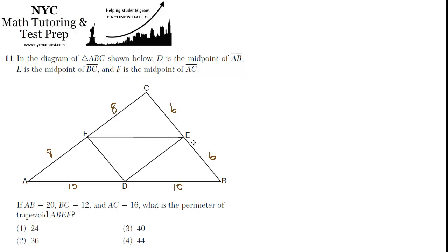Now, what about FE? Well, FE connects the two midpoints, the midpoint of AC and the midpoint of BC. So it turns out that it's going to be half of the base, which is AB. It's going to be 10.